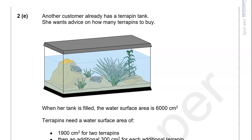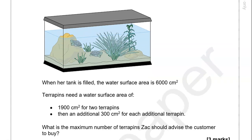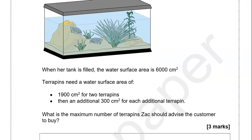Another customer already has a terrapin tank and wants advice on how many terrapins to buy. When filled, the water surface area is 6,000 cm squared. Terrapins need a water surface area of 1,900 cm squared for two terrapins, then an additional 300 cm squared for each additional terrapin. What is the maximum number of terrapins the customer should be advised to buy?